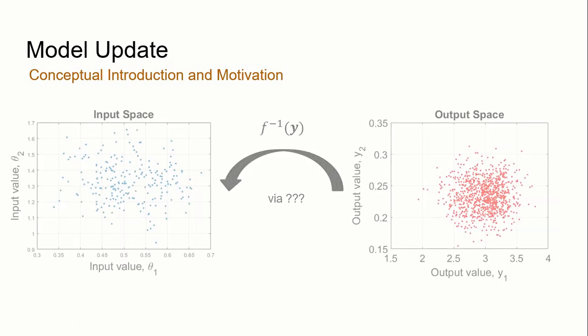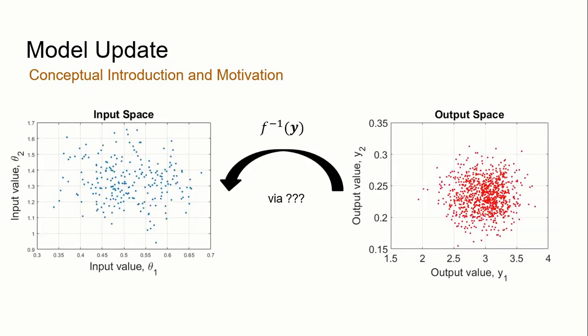Now, the reverse may not be as straightforward, and this is also known as the inverse problem. So in the inverse problem, you're only given the distribution of the output space, and in order to estimate the distribution of the input space from there, one way to do it is by determining the inverse function.